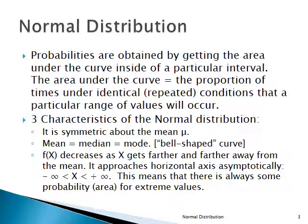We get probabilities by getting the area under the curve inside a particular interval, and that's the proportion of times under identical circumstances that a particular range of values is likely to occur. It's the proportion of the area under the curve inside the interval over the total area under the curve.